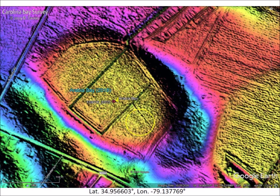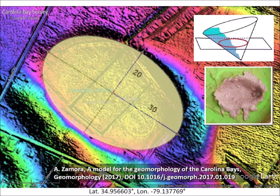This LiDAR image of Arabia Bay shows the well-defined rims that have resisted erosion by wind and water for thousands of years. The shape of the bay conforms to the prototypical elliptical geometry of the Carolina Bays.